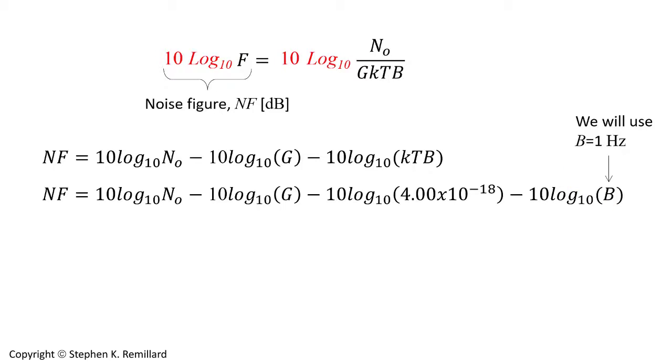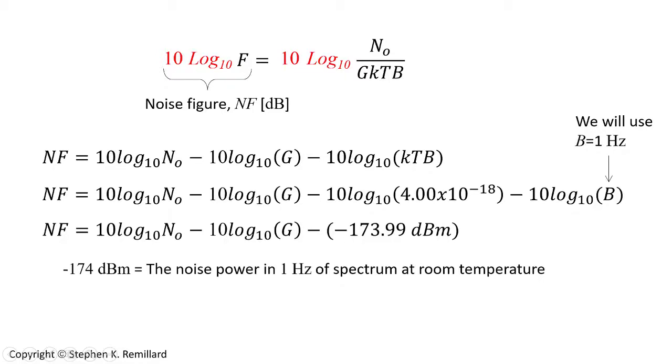If you don't have access to a 1 Hertz resolution bandwidth on your spectrum analyzer then use whatever it is for B and n sub o will be adjusted accordingly. If B is 10 Hertz, n sub o will be 10 decibels larger. 10 log base 10 of 4 times 10 minus 18 is minus 174 dBm. dBm is decibels relative to 1 milliwatt. Minus 174 dBm is the noise power contained in 1 Hertz of spectrum at room temperature. That's a good number for anybody working in RF and microwaves to remember.